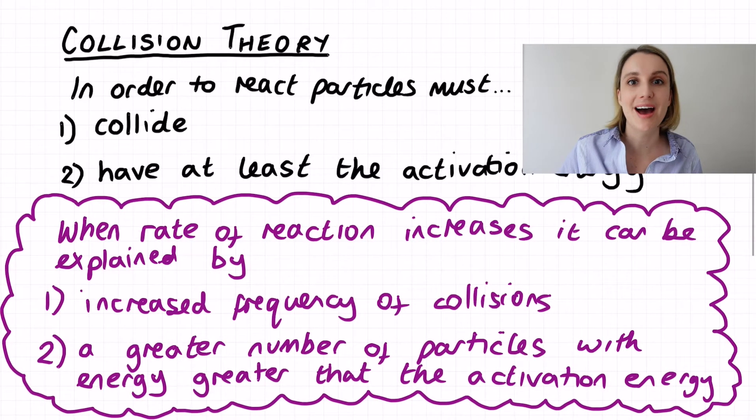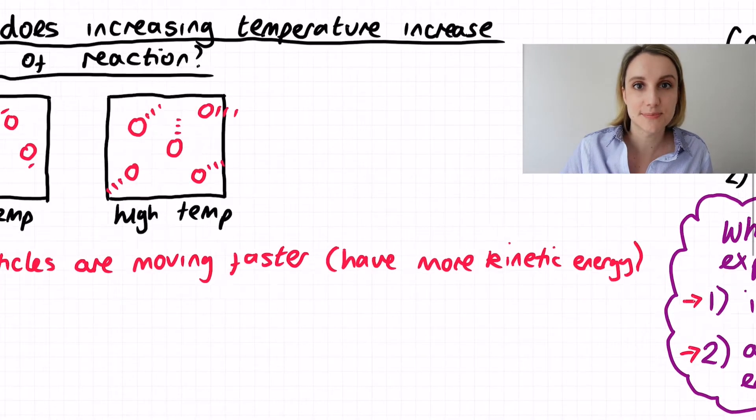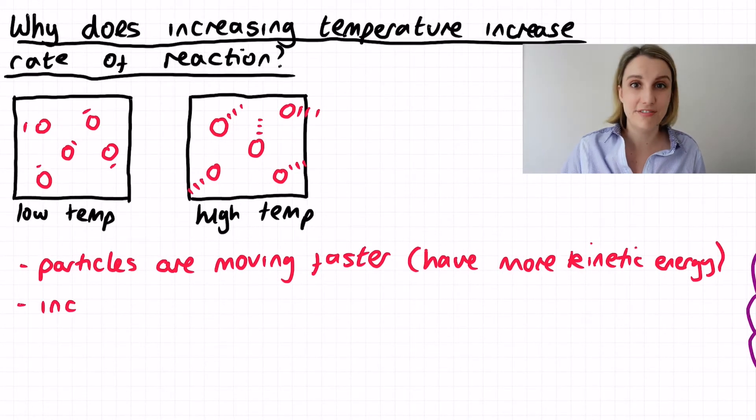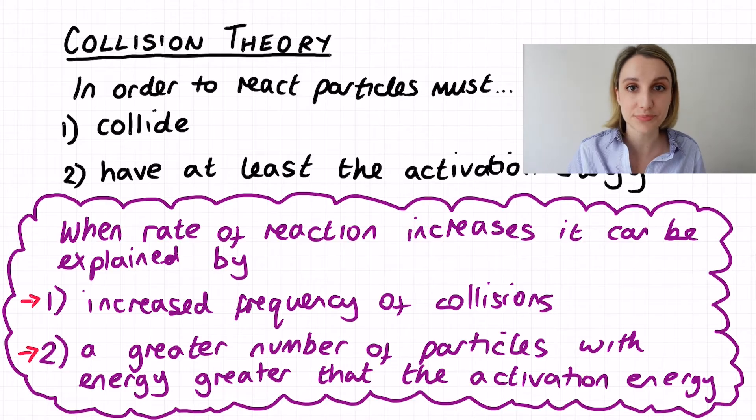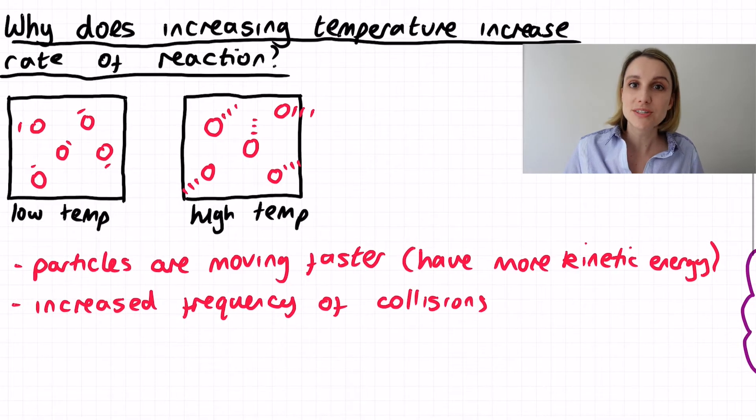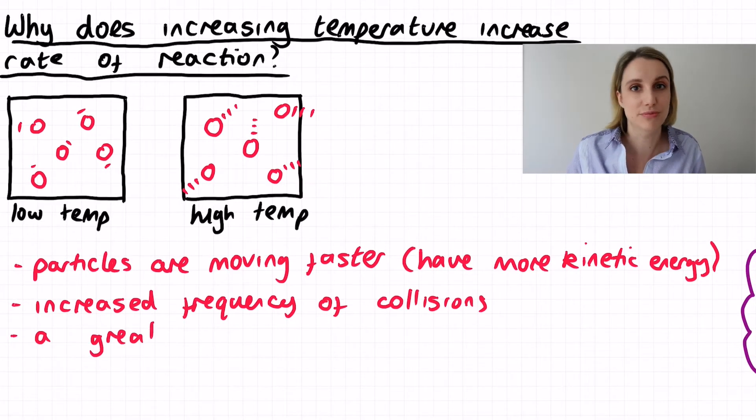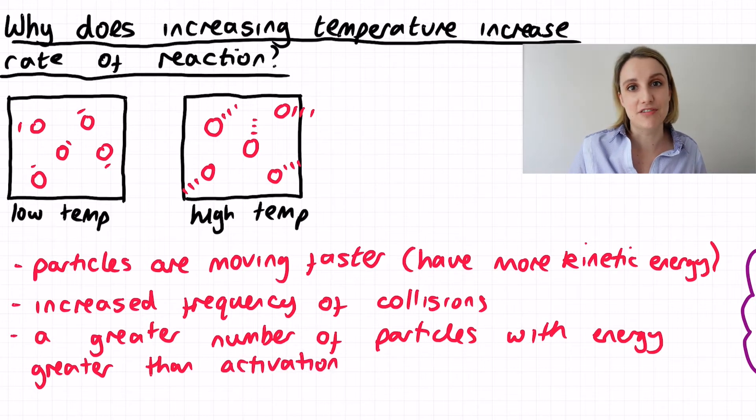If we think about how increasing that speed and energy of the particles is going to impact collision theory, we can see how the rate of reaction would increase. If the particles are going faster then you're going to increase the frequency that they're hitting each other at. They're going to hit each other more often. You're also going to increase the energy that those particles have. So temperature really does impact the rate of reaction massively because it's the only one that's really a double-pronged effect. It affects both the frequency of collisions and the energy of the particles.